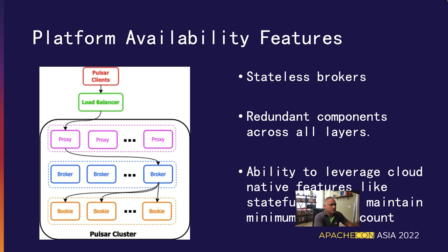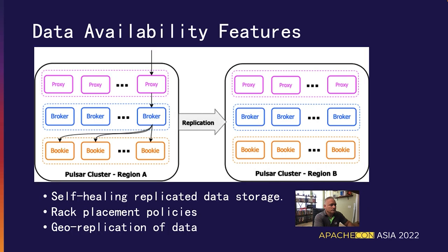Pulsar's storage layer also maintains multiple replicas of data on different bookie nodes to ensure that the loss of one or more bookies does not result in data loss. The storage layer is also self-healing — it will automatically detect any under-replicated data and recreate new copies. This allows you to easily replace failed bookies with new instances and let the self-healing mechanism repopulate them, ensuring data availability within an individual cluster. Pulsar also supports rack placement to ensure that at least one replica is stored in a different availability zone within the same geographical region.